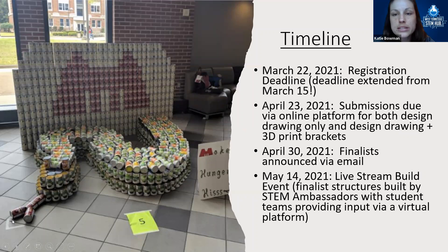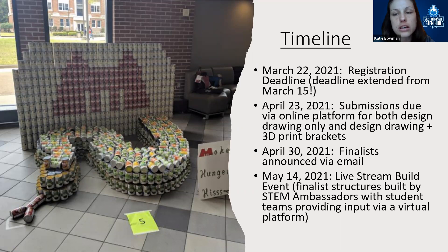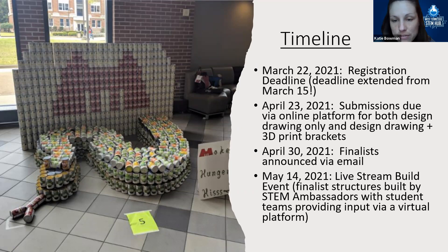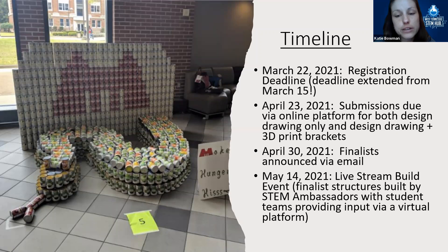The timeline: March 22nd is the registration deadline — an extension from the original deadline of March 15th. April 23rd is when submissions are due via the online platform through the CanStruction website for both design-only and design plus 3D print brackets. April 30th is when finalists are announced via email. May 14th is when the live stream build event will take place, completed by our STEM ambassadors on a virtual platform.